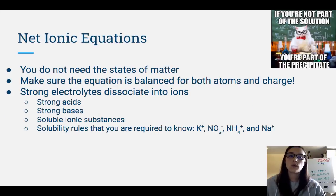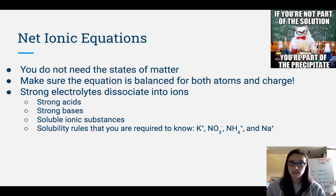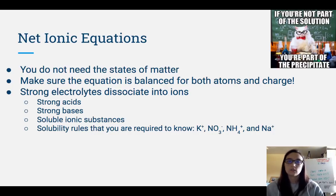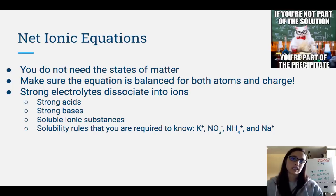For net ionic equations, you do not need the states of matter — you can still get the point even without them. Make sure the equation is balanced for both atoms and charge, using coefficients for atoms and ensuring charge is equal on both sides. Balancing charge is how we balanced redox reactions — adding electrons and canceling them out. Strong electrolytes dissociate into ions: strong acids, strong bases, and soluble ionic substances. Anything with potassium, nitrate, ammonium, or sodium will be 100% soluble and split into its ions. Only aqueous substances can dissociate; weak acids and weak bases, even though aqueous, stay together as a molecule.